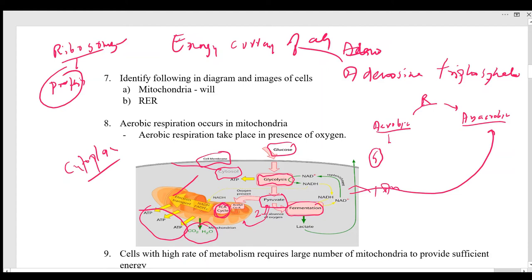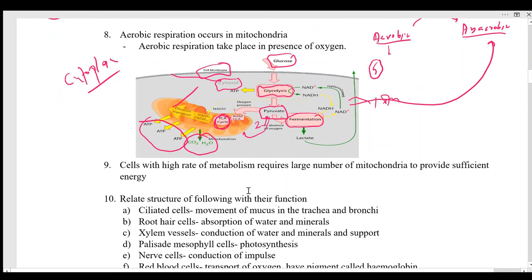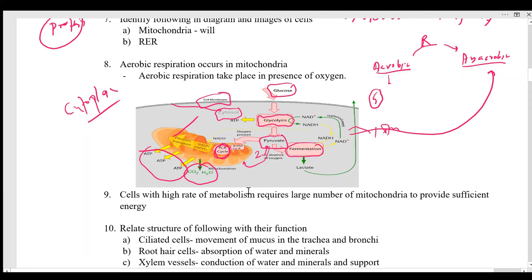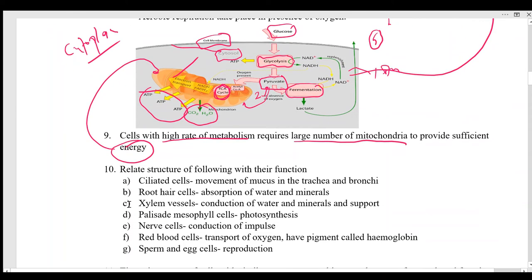Cells with a high rate of metabolism — meaning a large sum total of chemical reactions — will require a larger number of mitochondria, because the larger amount of energy needed will come majorly from the mitochondria.